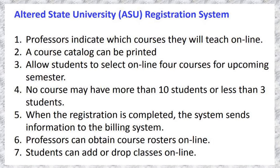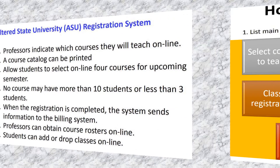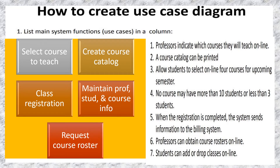These are the conditions that we have. First, we need to read carefully and understand the case scenario. So how do we solve our case scenario? First, you have to read and understand the case scenario from conditions one to seven. Then you have to identify the possible use cases. For example, in number one, professors indicate which courses they will teach online — that could be a possible use case here.